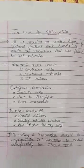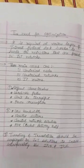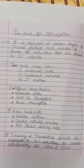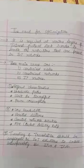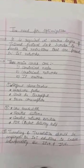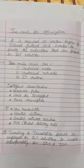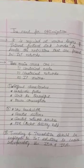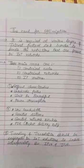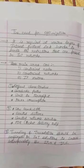Hello students, today let us go through the next topic of module 3, that is the need for optimization. Firstly, what is optimization? Optimization is nothing but making use of the resources very effectively. As we all know, IoT can be built on the Internet Protocol suite, which contains various layers or a combination of layers.